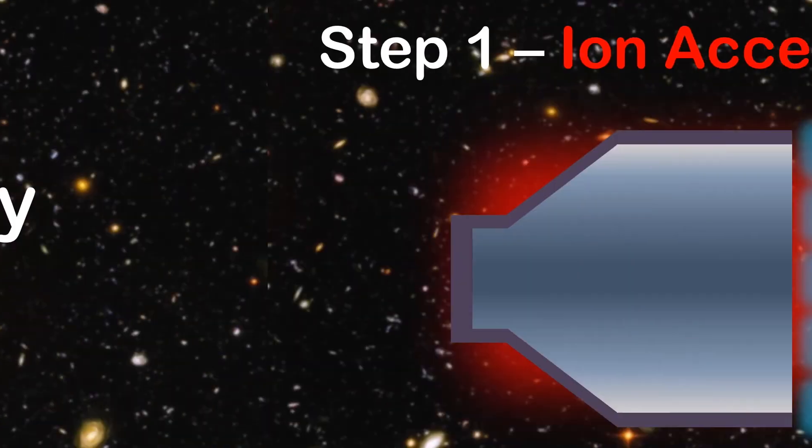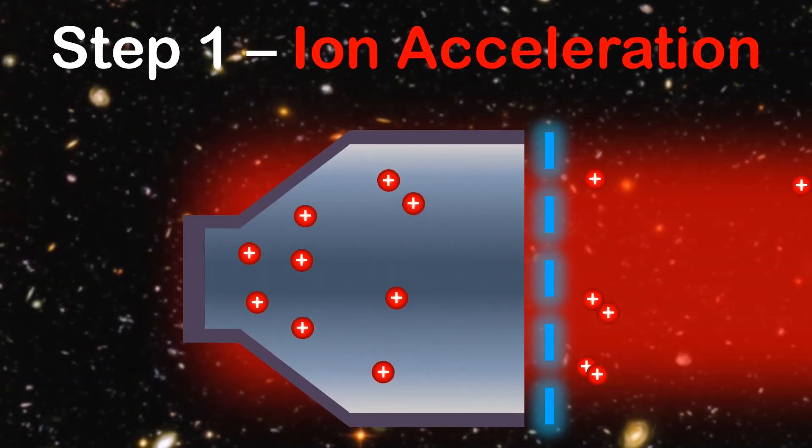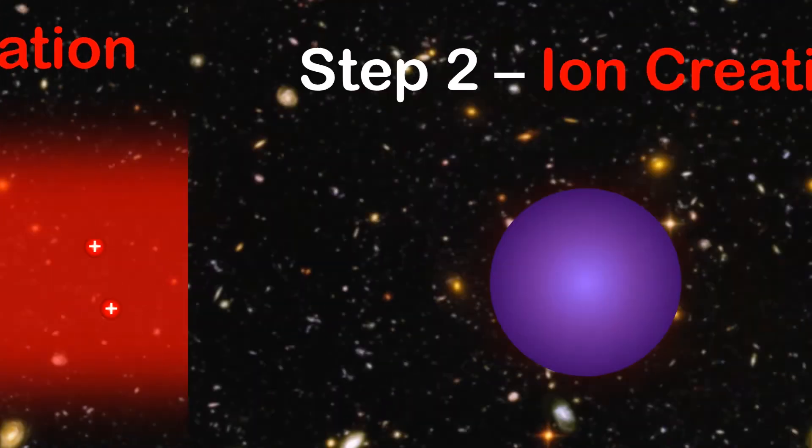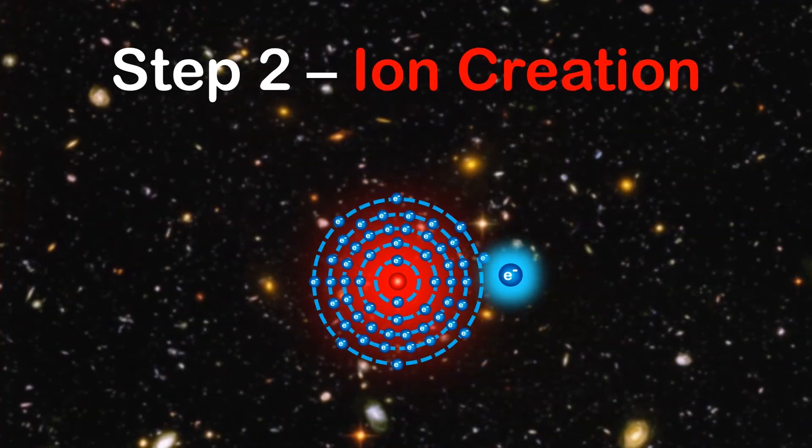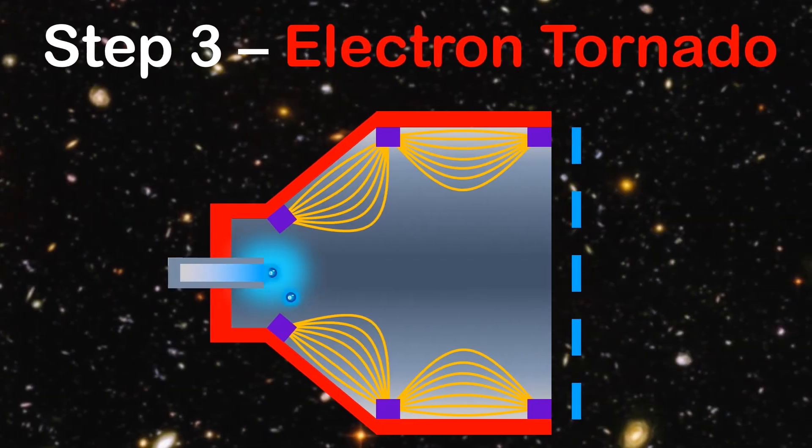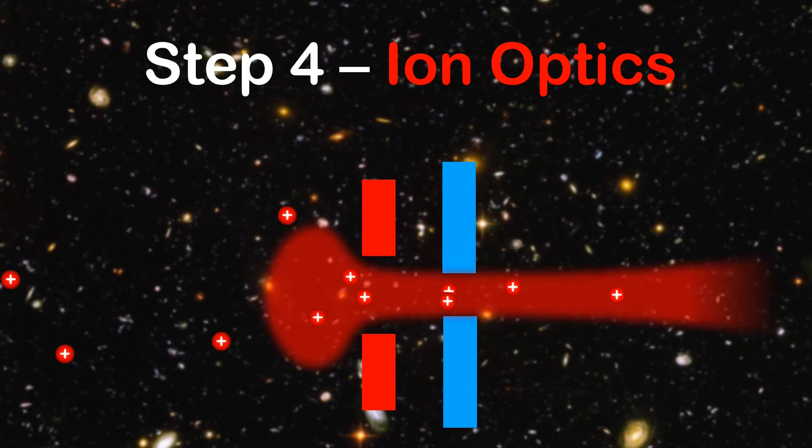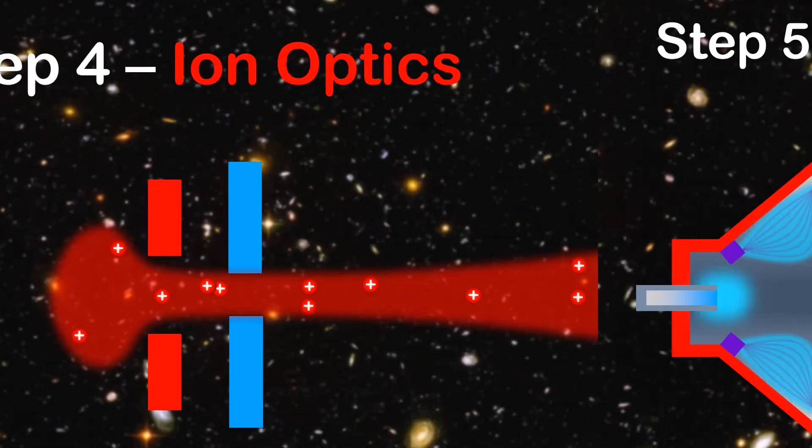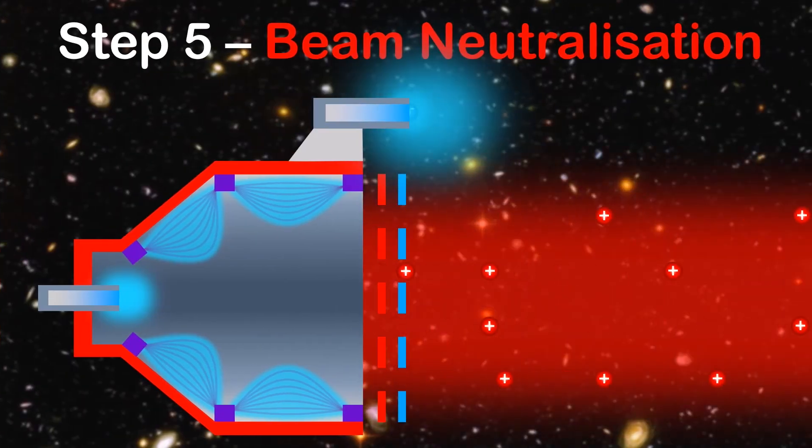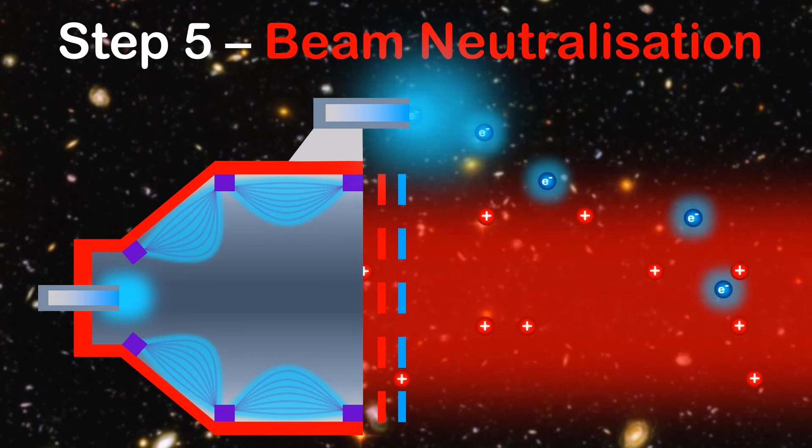So to summarize, positive ions are attracted to the accelerator grid and fired into space. Ions are created by firing electrons at xenon atoms. Ionization is increased by creating electron tornadoes at the walls. Ion optics shield the grid from damage. And finally the beam is neutralized by an external hollow cathode which prevents charge build up.